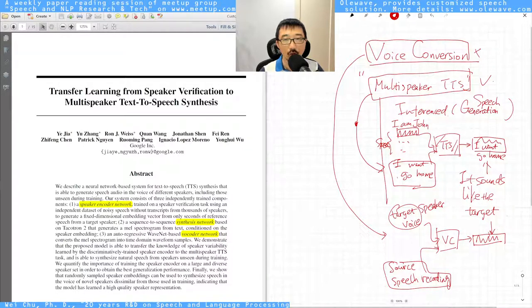I want to go home in John's voice. So in the multiple speaker TTS, it's going from text to speech but in a certain speaker's voice. But in voice conversion, the target is to convert one speaker's voice into another speaker's voice.